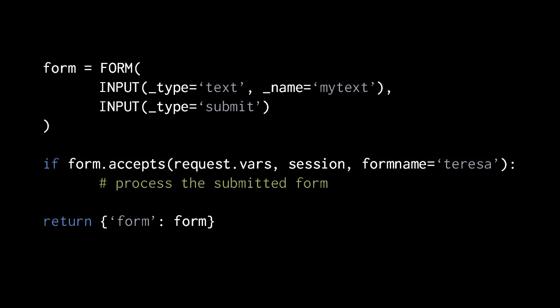If accepts returns false, there's no data to process, and in the action we return a dictionary with the form included so we can pass the form object to the view and render it with response.write. An important point about HTML helpers and the XML helper is that when you pass them as arguments to response.write instead of a string, the write method gets their content using the XML method and the escape argument has no effect. Text in HTML helpers is always escaped; in the XML helper it's never escaped.